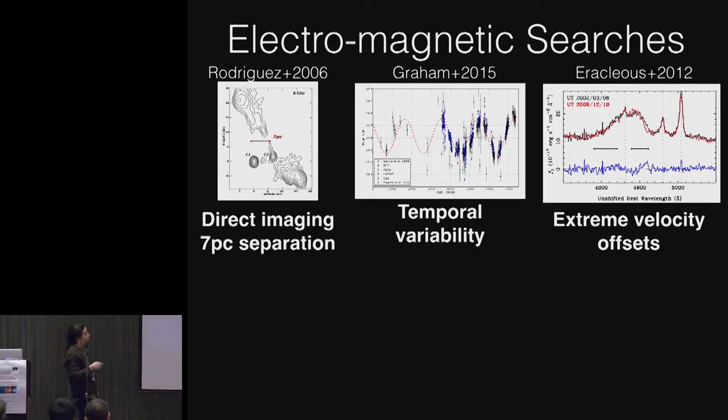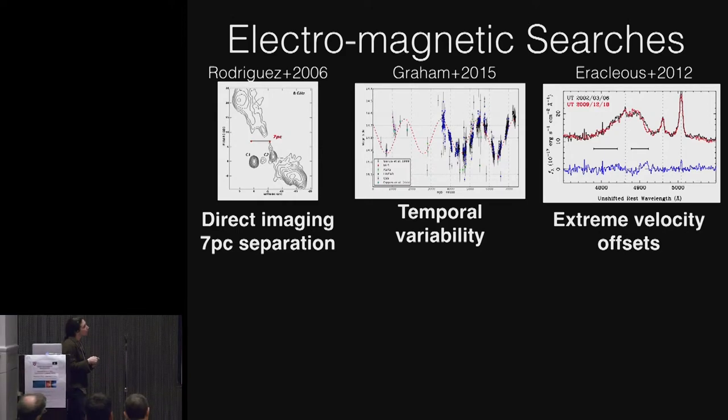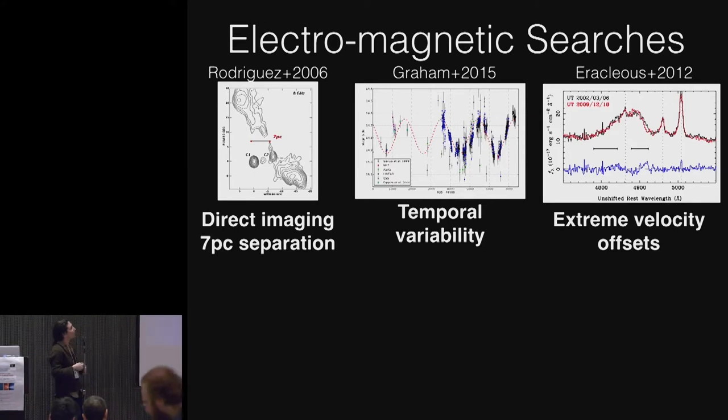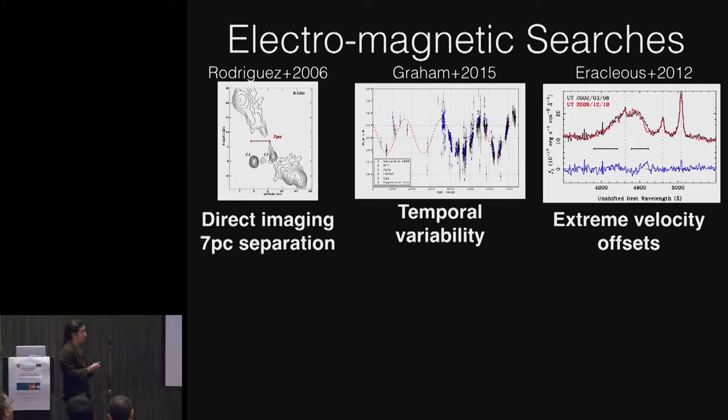A bunch of people have published candidates in this way. Many of them are not holding up with longer time baseline observations. Also, if you take all of the possible black hole binaries identified by this variability signature, you overpredict the gravitational wave background.